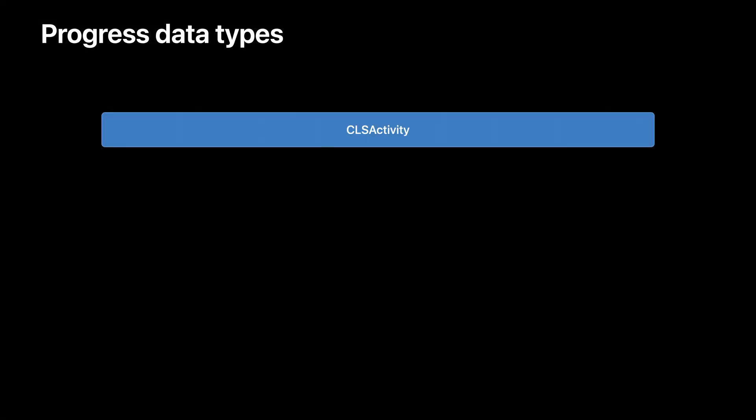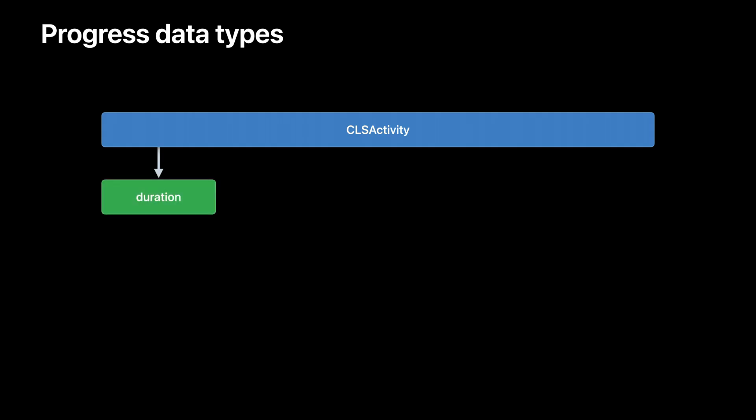If you've already adopted ClassKit, this will be a review of the current progress data types we have available. If you're new to ClassKit, these classes are currently being used on CLS contexts, but the same data types can also be applied to files. Here we have a CLS activity — this is a class used to encapsulate all of the progress data associated with a particular file. First, we have duration. This is the amount of time a student spent working on the assigned file. Time should be reported on all file types.